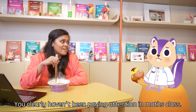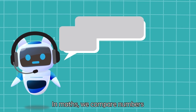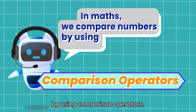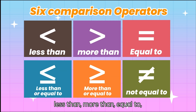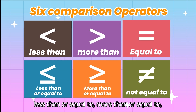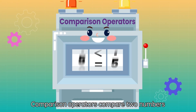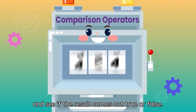You clearly haven't been paying attention in math class! In math, we compare numbers by using comparison operators. There are six comparison operators: less than, more than, equal to, less than or equal to, more than or equal to, and not equal to. Comparison operators compare two numbers and see if the result comes out true or false.